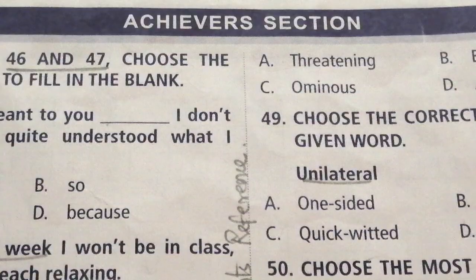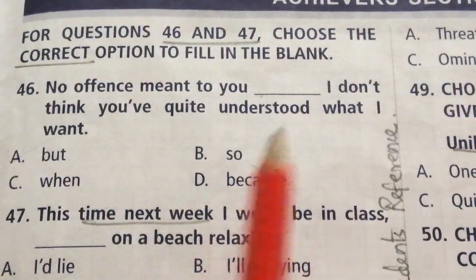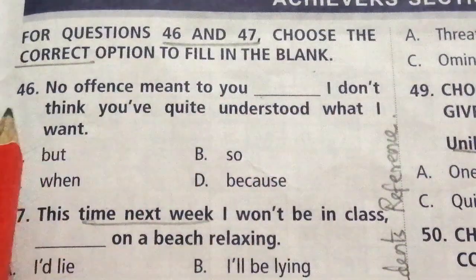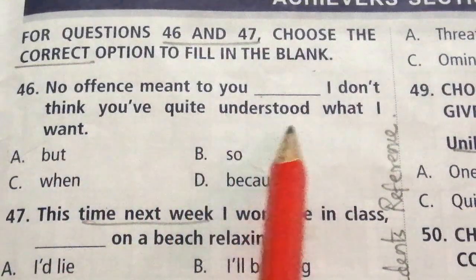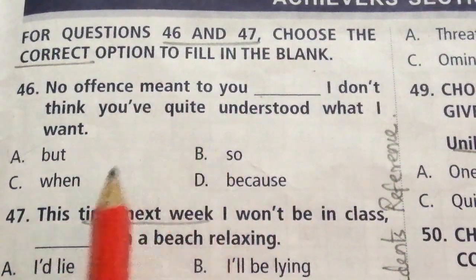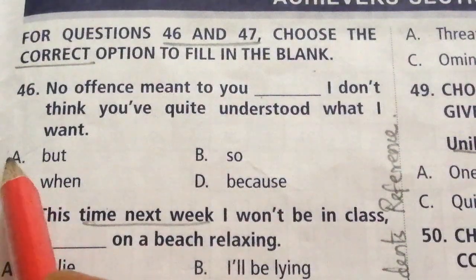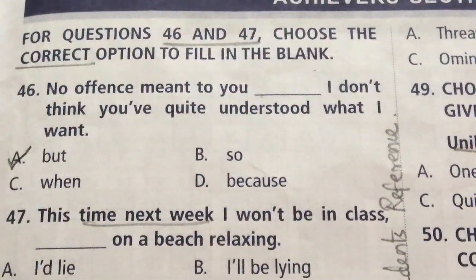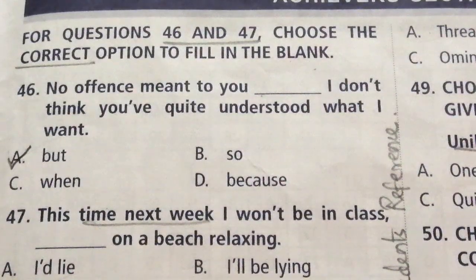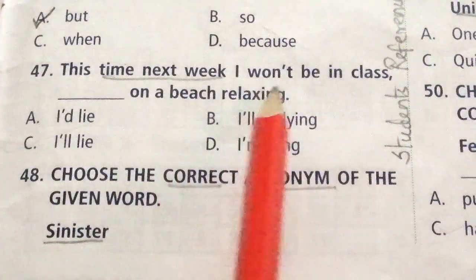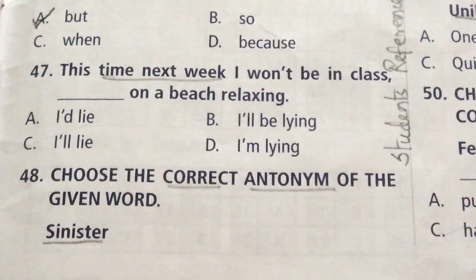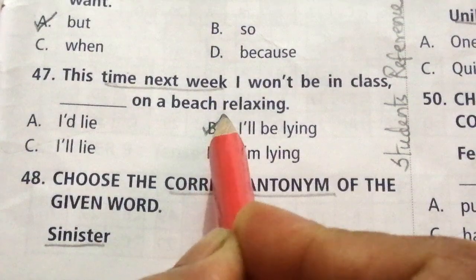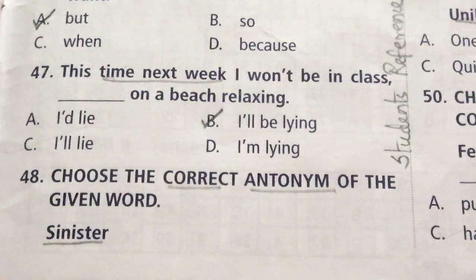Achievers section: For questions 46 and 47, choose the correct option to fill in the blank. Question 46: No offense meant to you, dash I don't think you have quite understood what I want. Options: But, So, When, Because. The answer is A: But. Question 47: This time next week I won't be in class; I dash on a beach relaxing. Options: would lie, will be lying, will lie, am lying. The answer is B: will be lying. I will be lying on a beach relaxing.